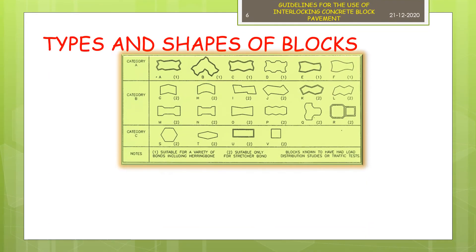Depending on the interlocking condition, the paver block is categorized into three categories. In category A, blocks are of designs in which they are connected to other blocks with all four of their sides. Whereas in category B, the blocks can only be interlocked with other blocks from two sides. The category C blocks are not dented type but depend on dimensional accuracy for interlocking effect.